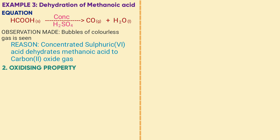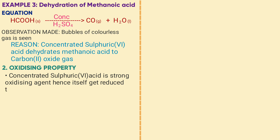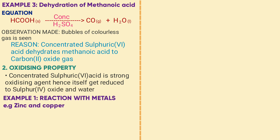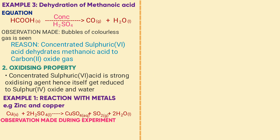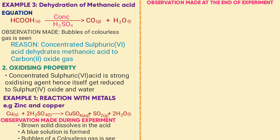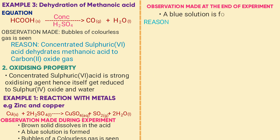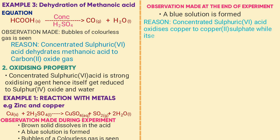Property number two is the oxidizing property. Concentrated sulfuric acid is a strong oxidizing agent; it itself gets reduced to sulfur dioxide and water. Example one — reaction with metals, e.g. copper and zinc. Using copper: Cu + 2H₂SO₄ → CuSO₄ (solution) + SO₂ + 2H₂O. Observation: the brown solid dissolves in the acid and a blue solution is formed. Reason: concentrated sulfuric acid oxidizes copper to blue copper sulfate solution while it is self-reduced to sulfur dioxide gas and water.